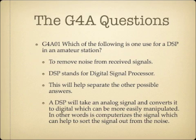Which of the following is one use for a DSP in an amateur station? One use for a DSP is to remove noise from received signals, so one purpose of a DSP is to act as a filter. DSP stands for digital signal processor. It takes an analog signal and converts it to digital information, allowing you to manipulate it with a computer or software. You can do almost anything once the signal has been digitized, including removing noise from received signals.